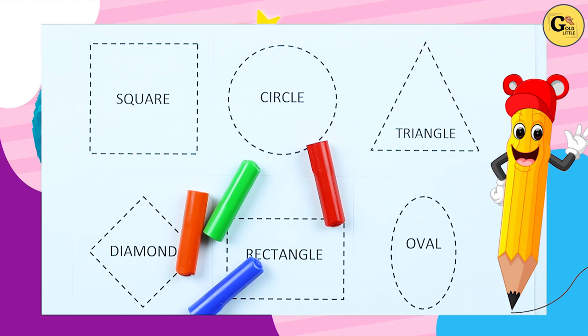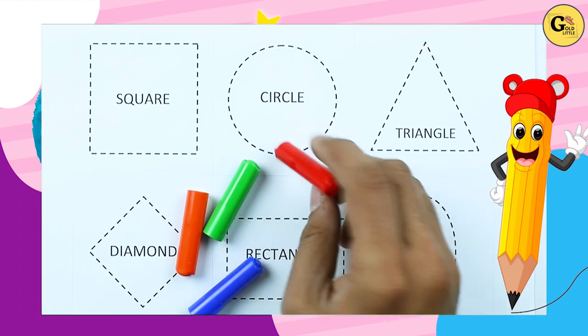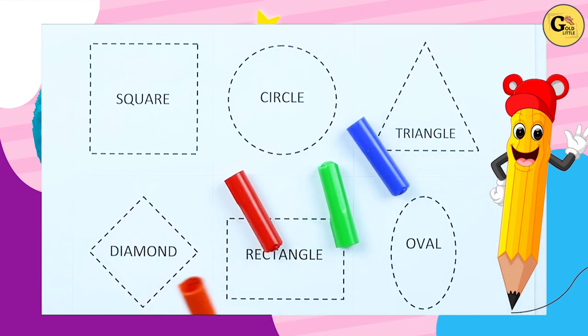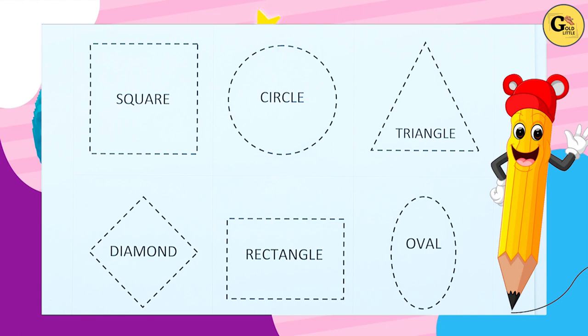Square, circle, triangle, diamond, rectangle, oval with colors: red color, blue color, orange color, green color. Let's start.